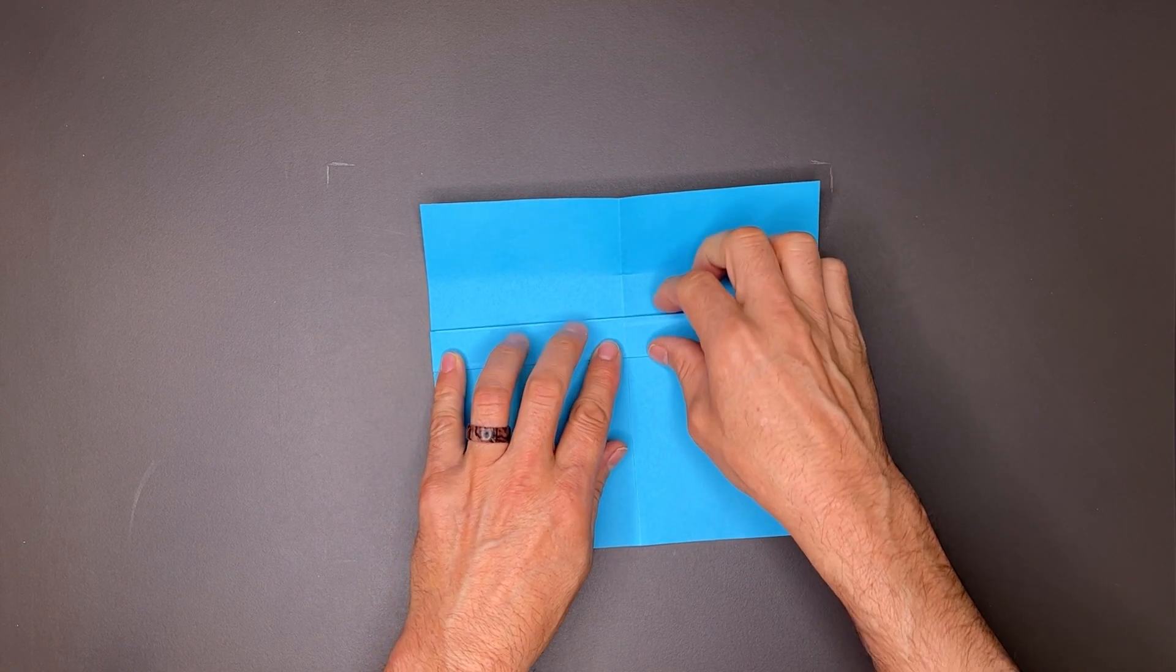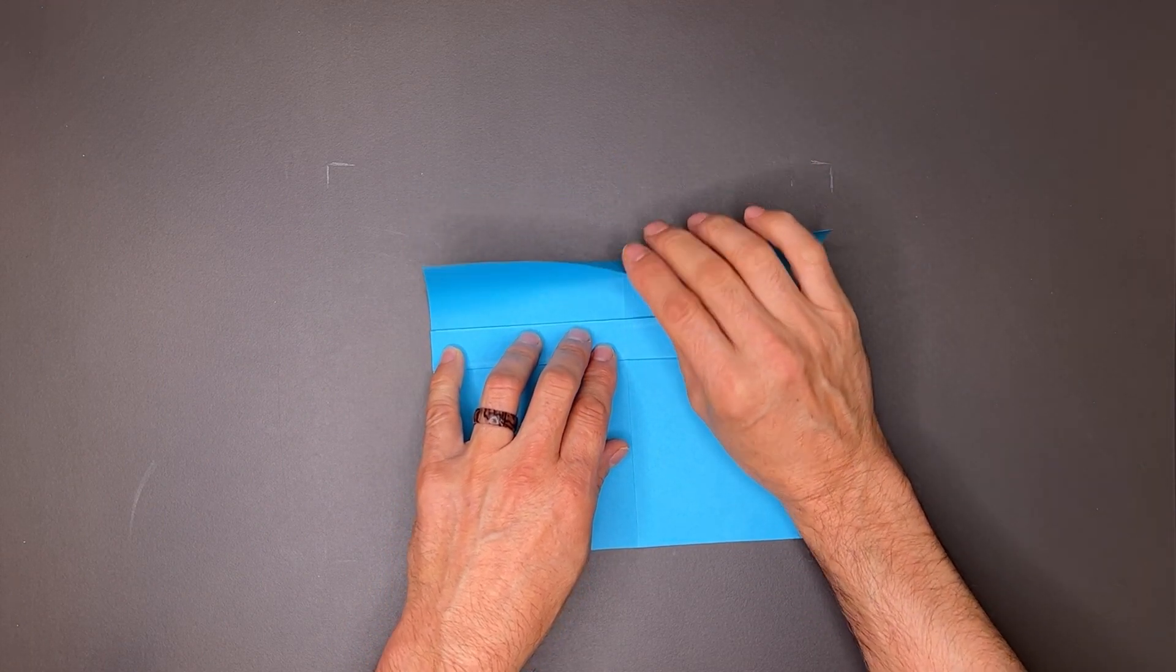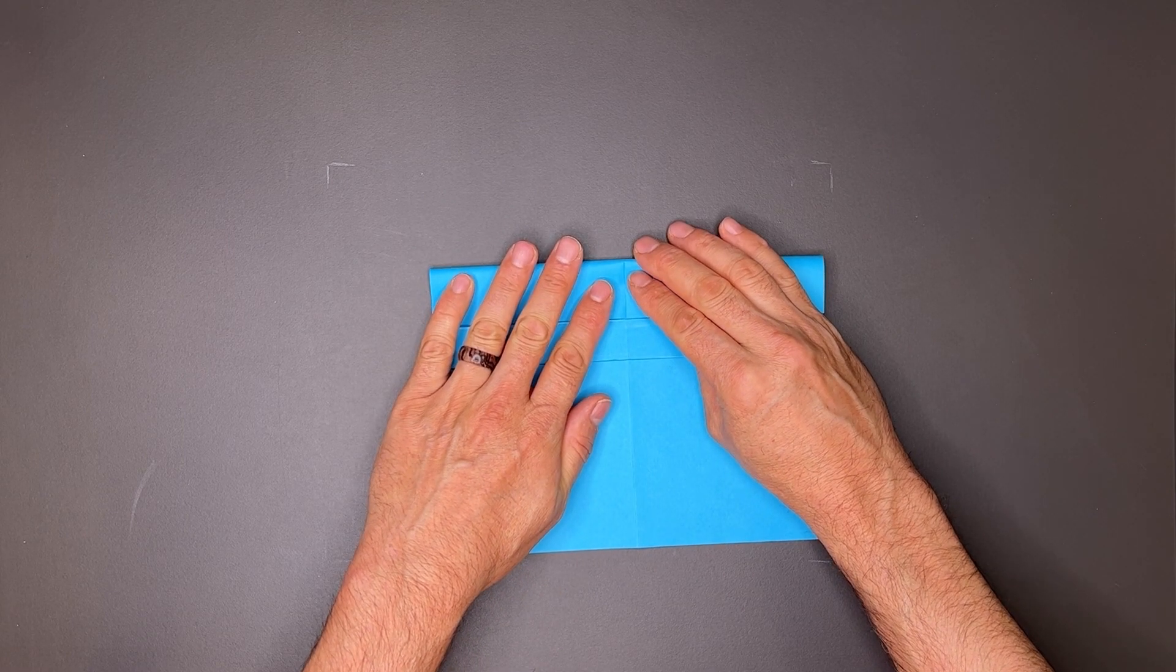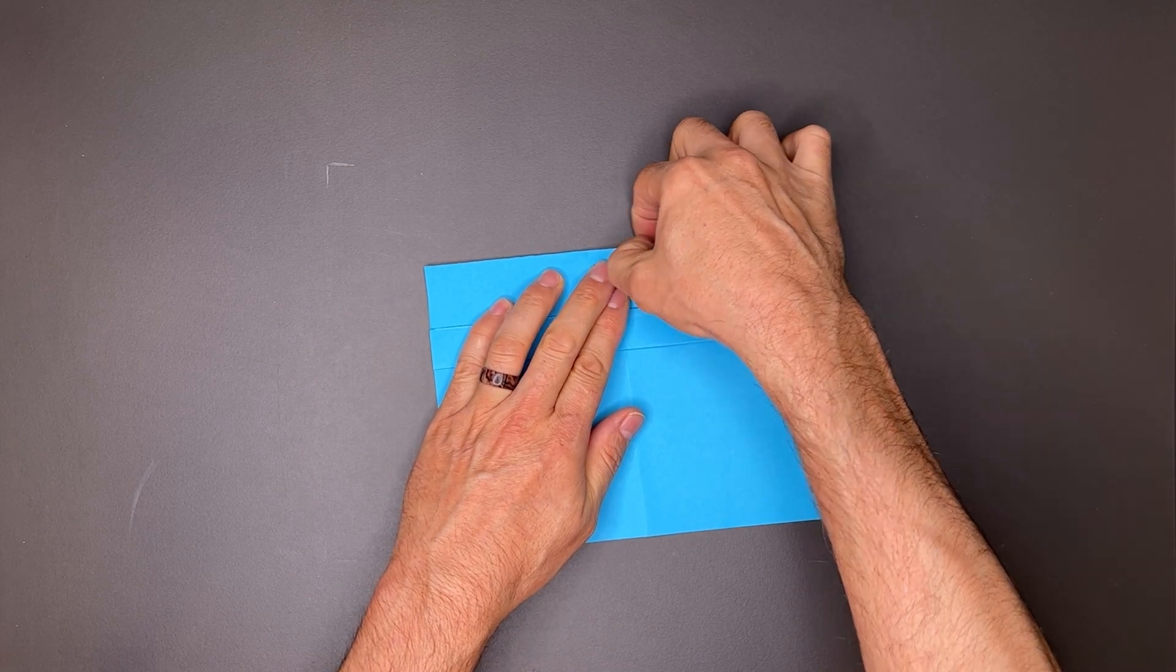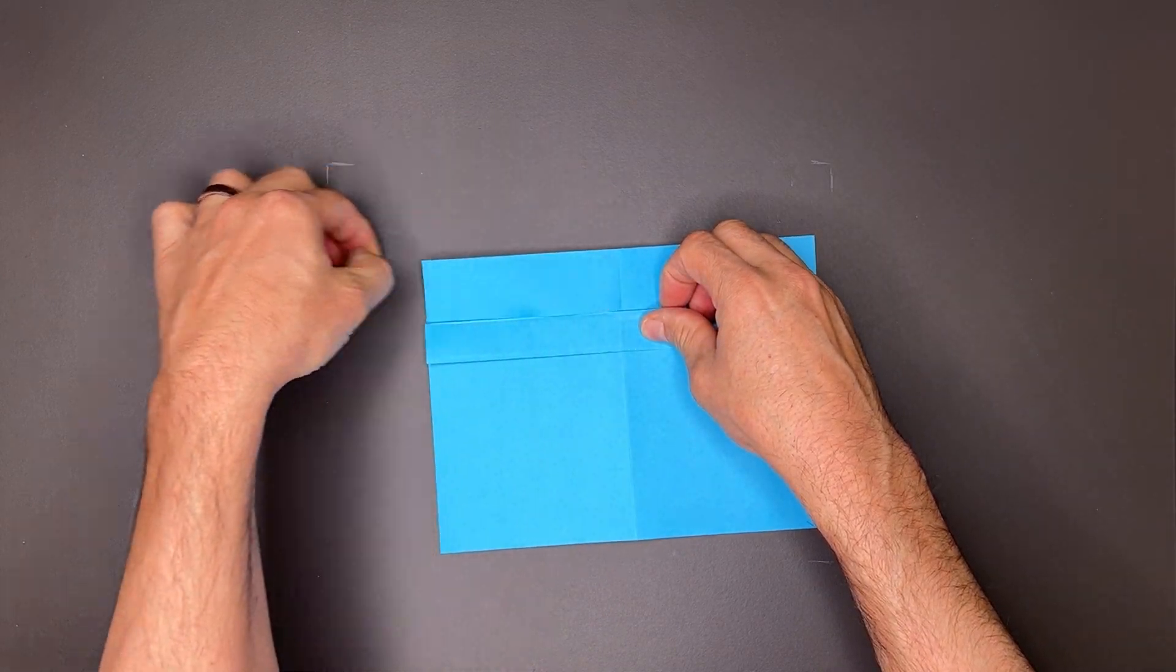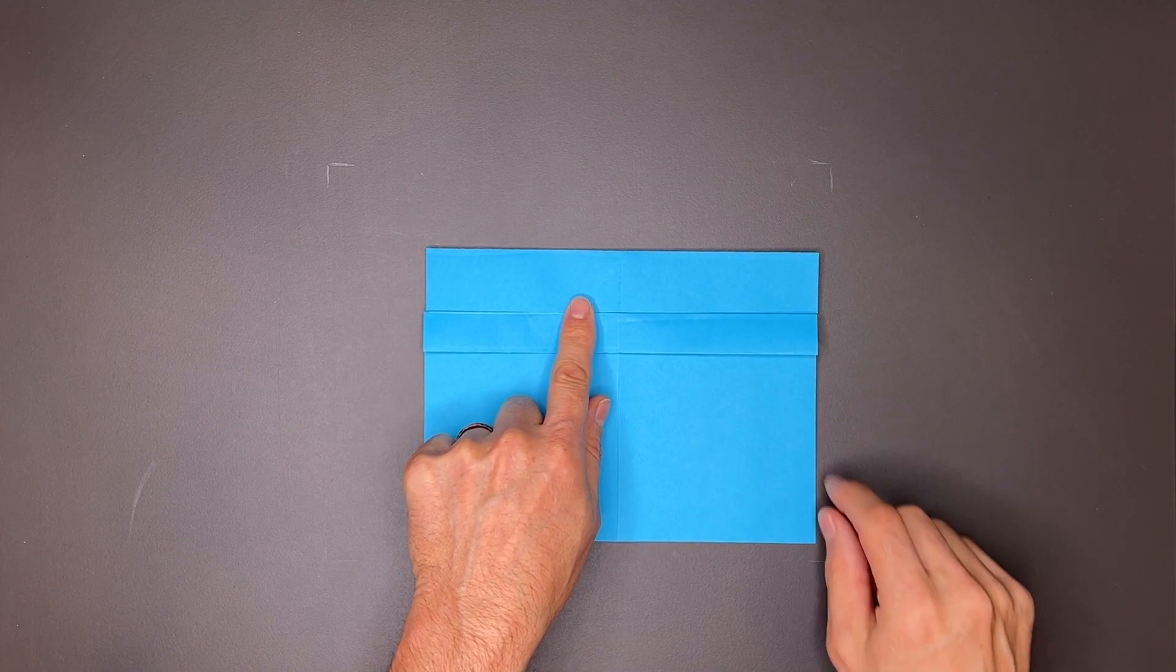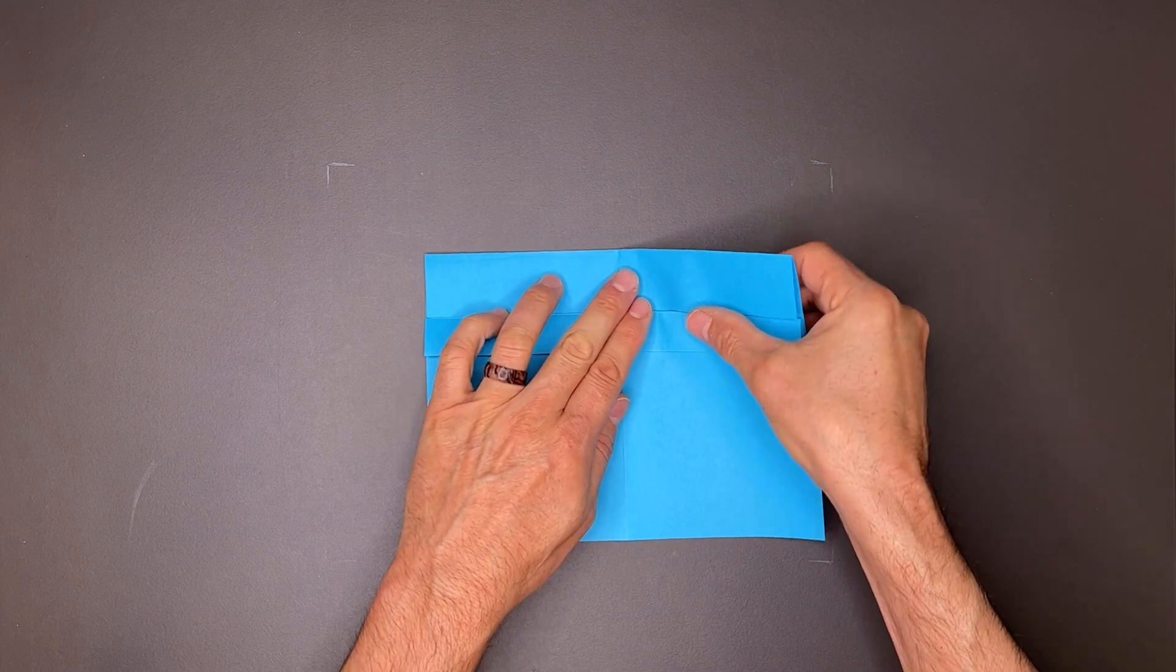Now I want to take the top edge and land right here on this top edge, just like this. Now I take this top edge and land to center, forming a triangle.